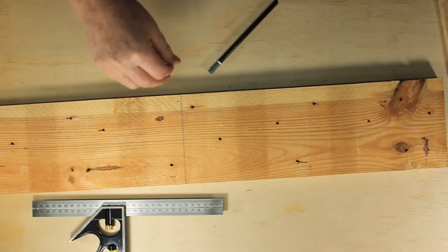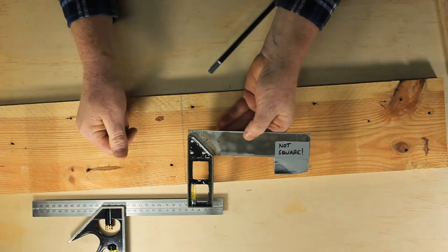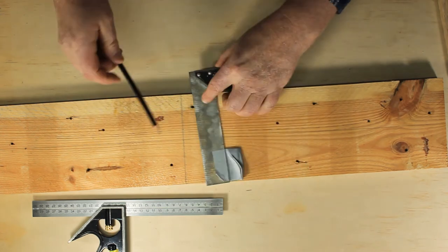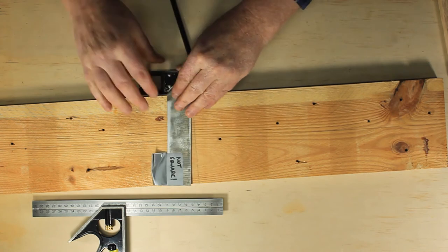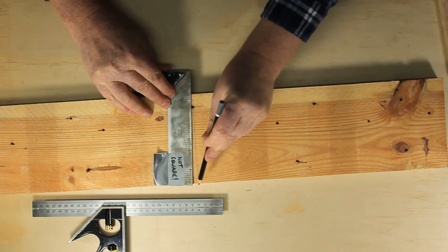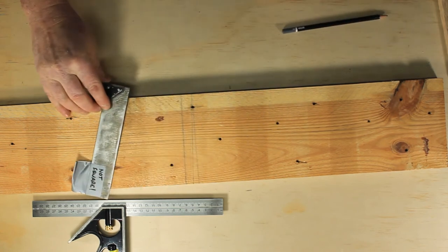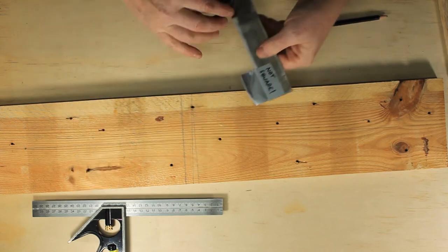If your square is not accurate, as in this used one, you'll get a very different result. Looks like a slice of pie.